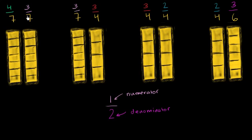So let's look at this first pair. I want to compare 4 sevenths to 3 sevenths. I have two wholes right over here — they're the same whole — and I've divided them into seven equal chunks. I want to see what's larger: 4 sevenths or 3 sevenths. So I can fill in 4 sevenths — let me select 4 out of the 7.